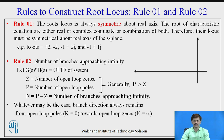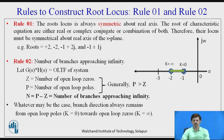If we draw the sketch of the s-plane with real and imaginary parts, we can see that there are two roots: at minus one we have a pole and at minus two we have a zero, represented as cross and circle respectively. The root locus moves from the open loop pole to the open loop zero as K varies from zero to infinity.